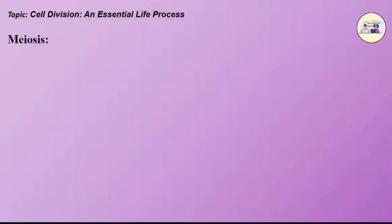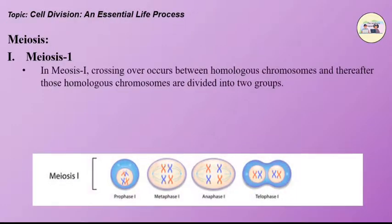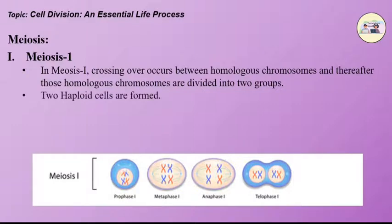Meiosis is completed through two stages: meiosis I and meiosis II. In meiosis I, crossing over occurs between homologous chromosomes and thereafter those homologous chromosomes are divided into two groups. Two haploid cells are formed.